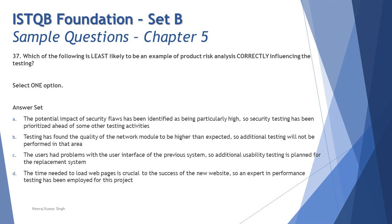Option B says testing has found the quality of the network module to be higher than expected, so additional testing will not be performed in that area. This also appears to go in line — quality is higher than expected, so you concentrate testing on other more critical areas. As long as you meet the acceptance criteria and exit criteria of certain modules, you don't have to perform anything beyond that.